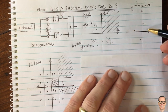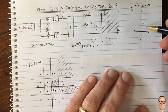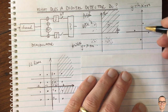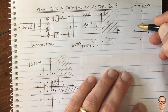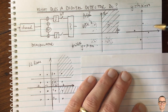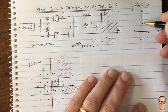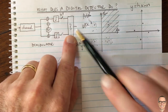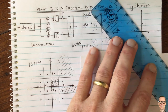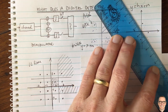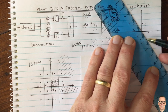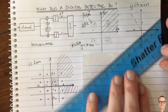The fading channel has the effect of rotating the constellation by some rotation and also scaling it. The original points would have been on the 45-degree lines, but now the points have been rotated because of the channel. In the detector, its job is to apply new decision boundaries — rotated decision boundaries.